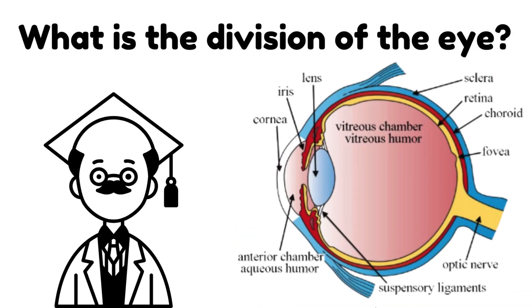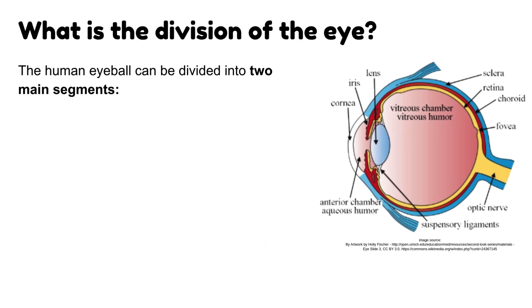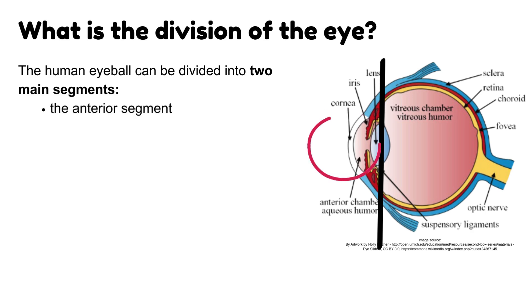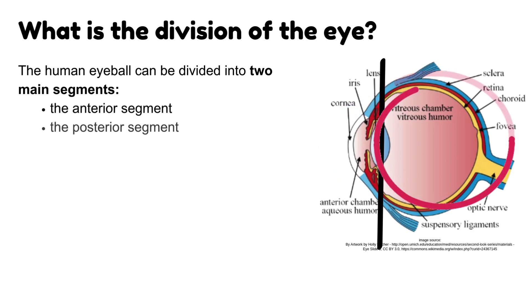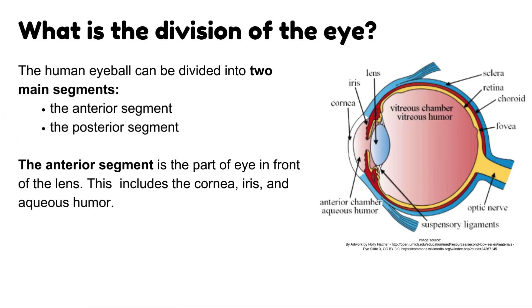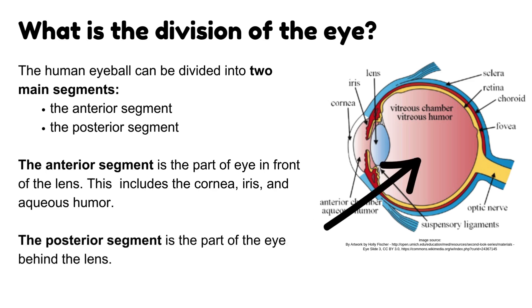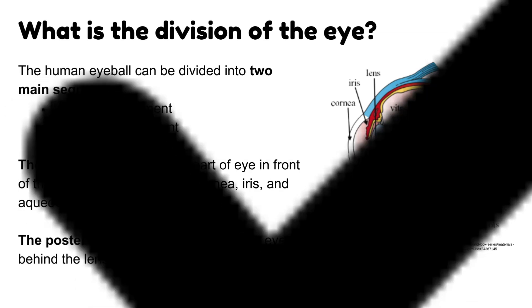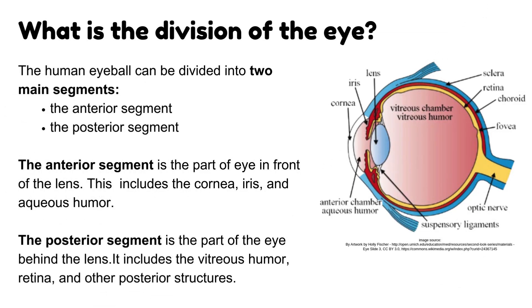What is the division of the eye? The human eyeball can be divided into two main segments: the Anterior Segment and the Posterior Segment. The anterior segment is the part of the eye in front of the lens, and includes the cornea, iris, and aqueous humor. The posterior segment is the part of the eye behind the lens, and includes the vitreous humor, retina, and other posterior structures.